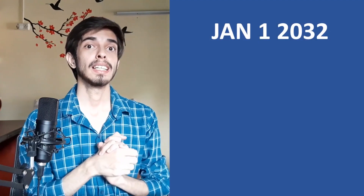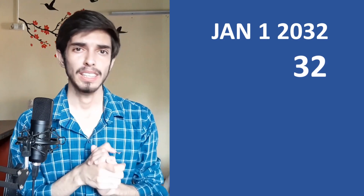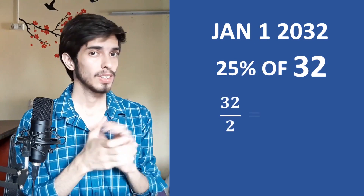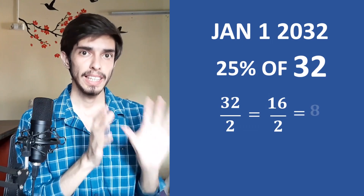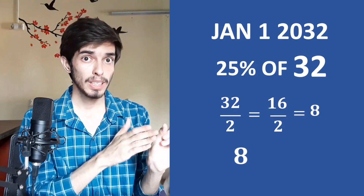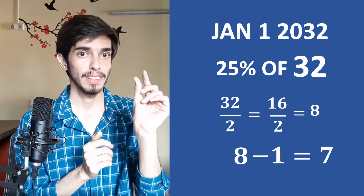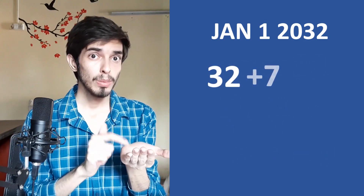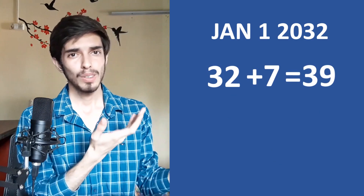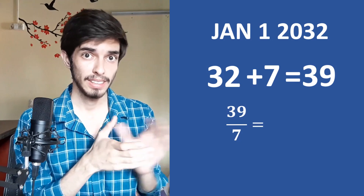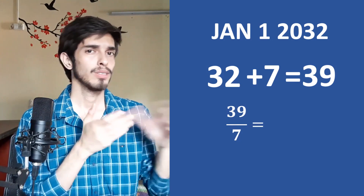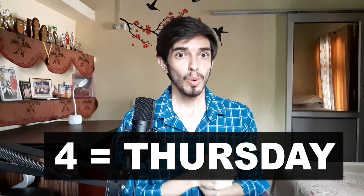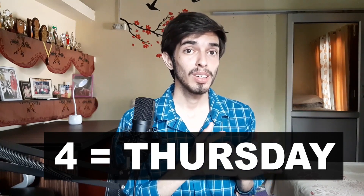Let's take an example: January 1 of 2032. Calculate 25% of 32: 32 divided by 2 is 16, and 16 divided by 2 is 8. Now this is a leap year, so subtract $1 from it — we have 7. Our bill is basically 32 plus 7, which is $39. Divide by 7: 7×5 is 35, so we have a remainder of 4, and 4 is Thursday. So January 1, 2032 will be a Thursday.